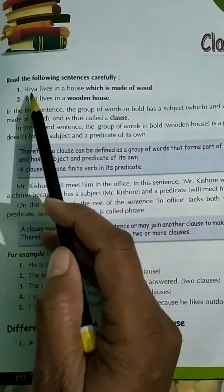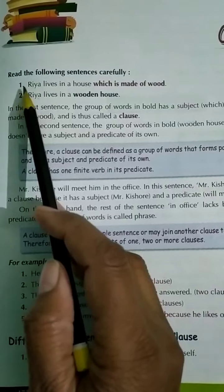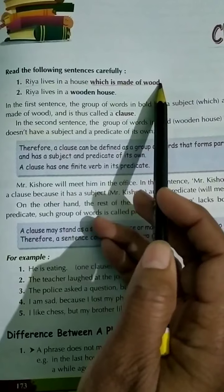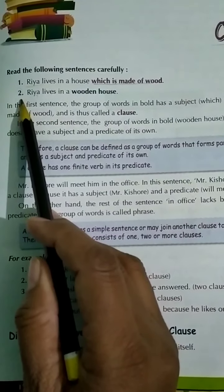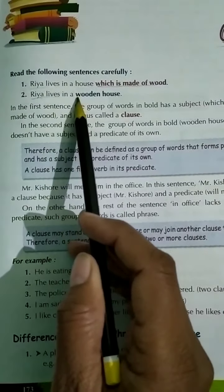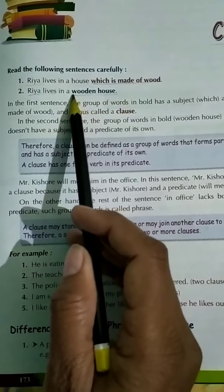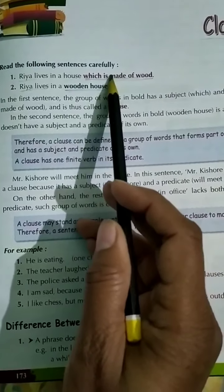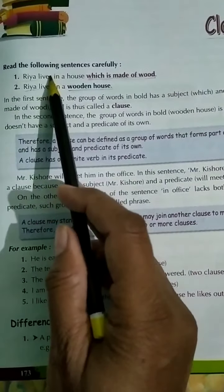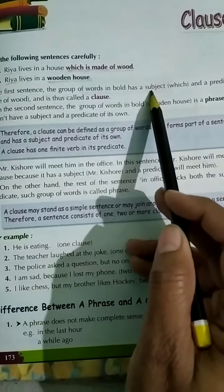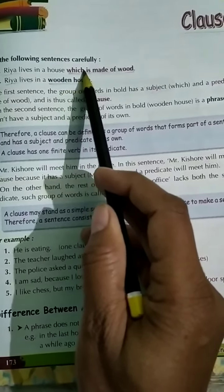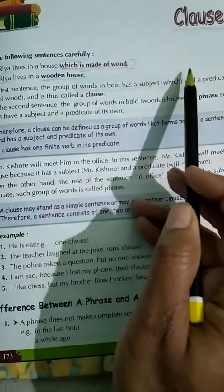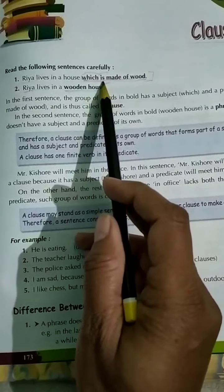Let us read these two sentences carefully. Sentence number one says: Rhea lives in a house which is made of wood. Now in the first sentence, the group of words in bold has a subject — that is 'which' — and 'is made of wood' is the predicate. So it is called a clause.